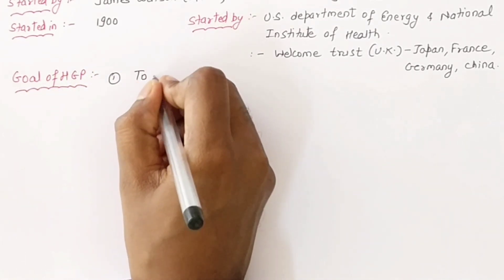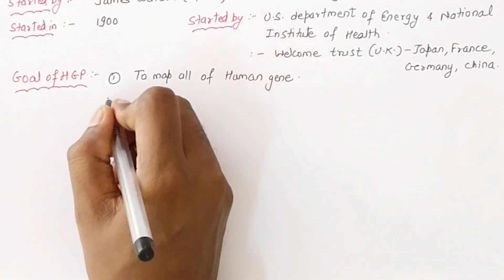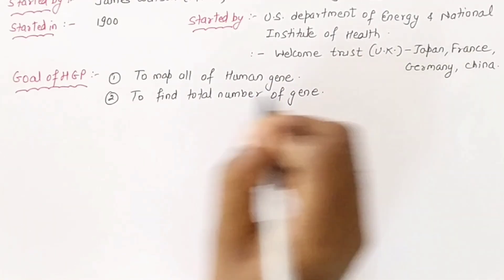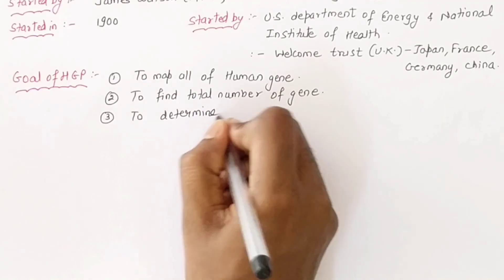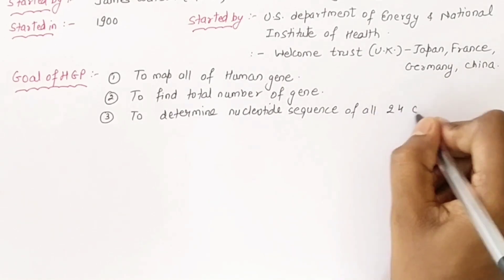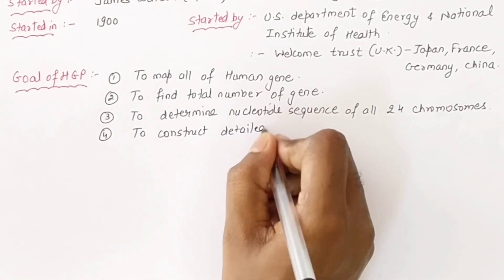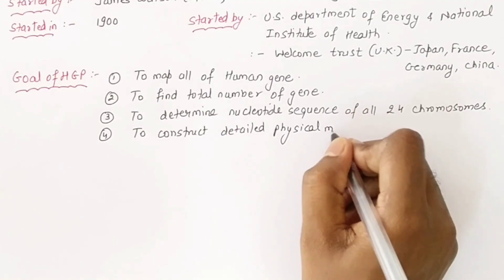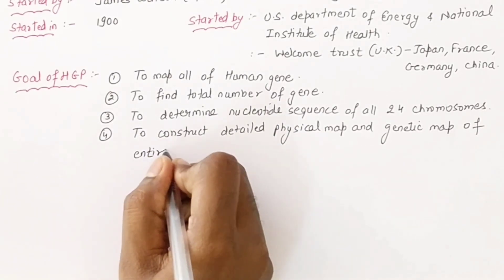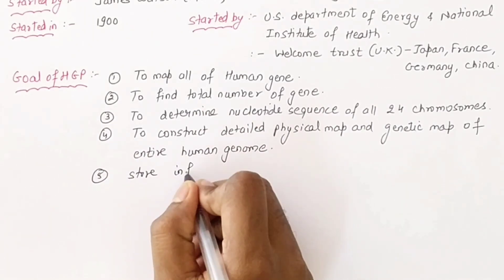The Human Genome Project goals are important to understand. The first goal was to map all the human genes in our genome. The second goal was to find out the total number of genes present. The third goal was to determine how many nucleotides are present and their sequence across all 24 chromosomes. The fourth goal was to construct a detailed physical map and genetic linkage map.